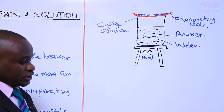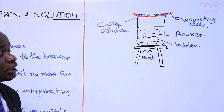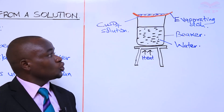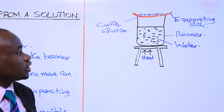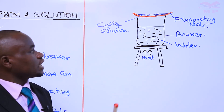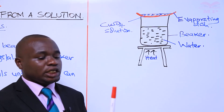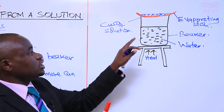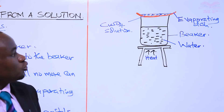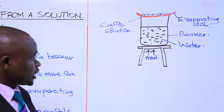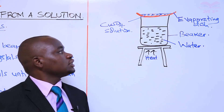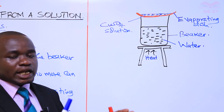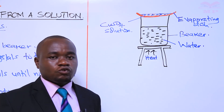While heating, you'll be required to dip a clean glass rod into the salt solution so that you can find out when it's ready to form crystals. Once you remove the glass rod from the solution and hold it in the air, on cooling you'll be able to see some crystals on the glass rod — that means the solution is ready to form crystals. If it is not ready, then you continue heating. After that, you remove the evaporating dish from the source of heat and allow the salt solution to cool.